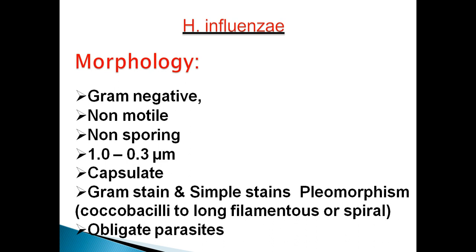When you observe these bacteria under a microscope with Gram staining, you will see they are pleomorphic — meaning they have different shapes, not a fixed shape. Their shape may range from coccobacilli to long filamentous forms. They can appear coccus-shaped, bacilli-shaped, long filamentous, or spiral-shaped. They are strict obligate parasites, meaning they can only grow depending upon the human body.